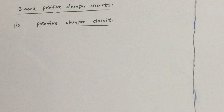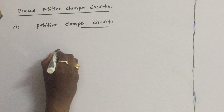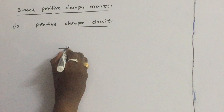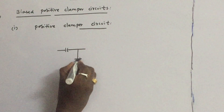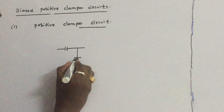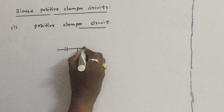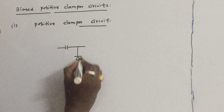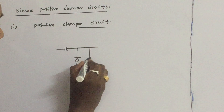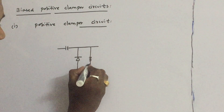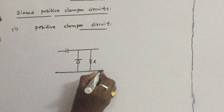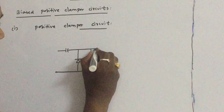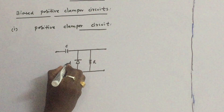The positive clamper circuit is very simple. It consists of only two elements: a capacitor and a reverse diode. In practical circuits, we place a resistor R across the diode.